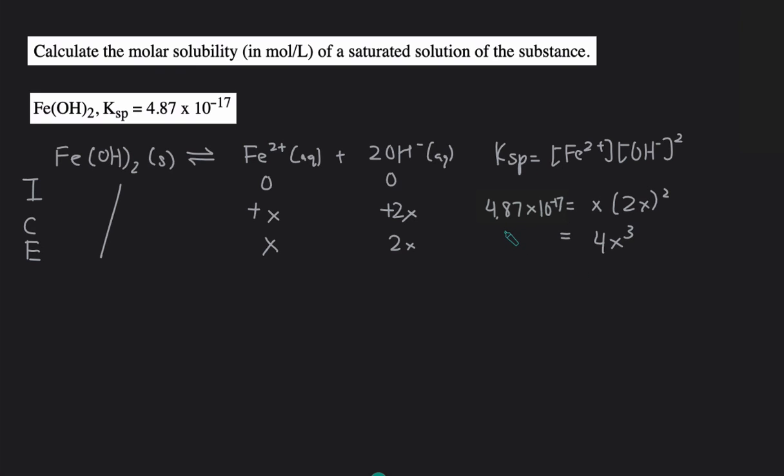Then to solve for X we divide the Ksp by 4 and then raise it to the 1/3 power or cube root it. And then we'll get X equals 2.30 times 10 to the negative 6 moles per liter.